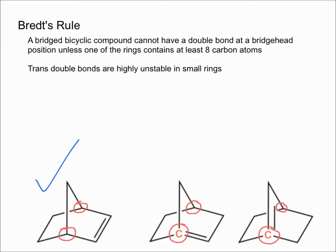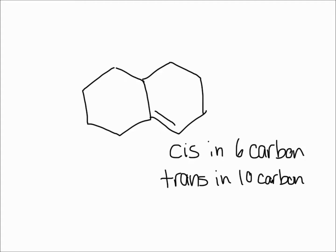Now, let's look at a molecule that has more than 10 carbons in a ring and can fit a double bond at a bridgehead position. In this molecule here, what I've drawn is a double bond at the bridgehead position.